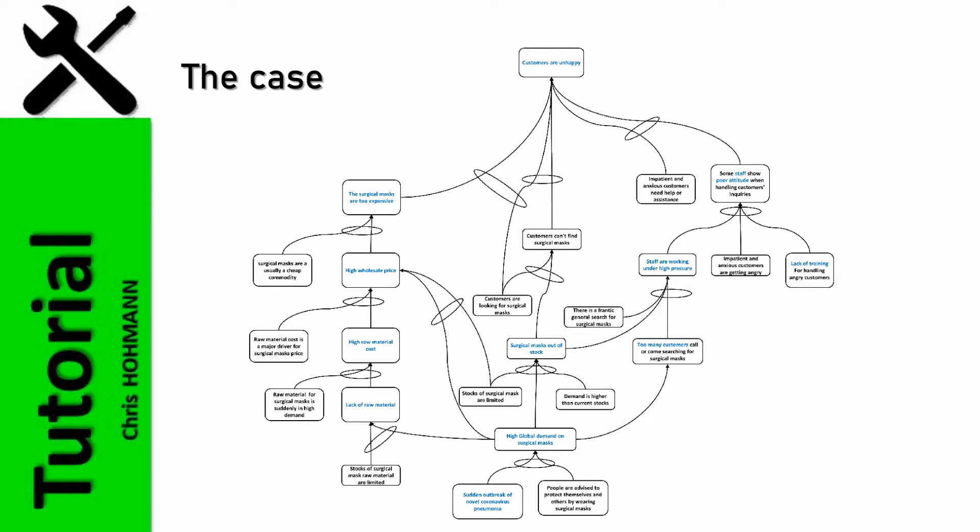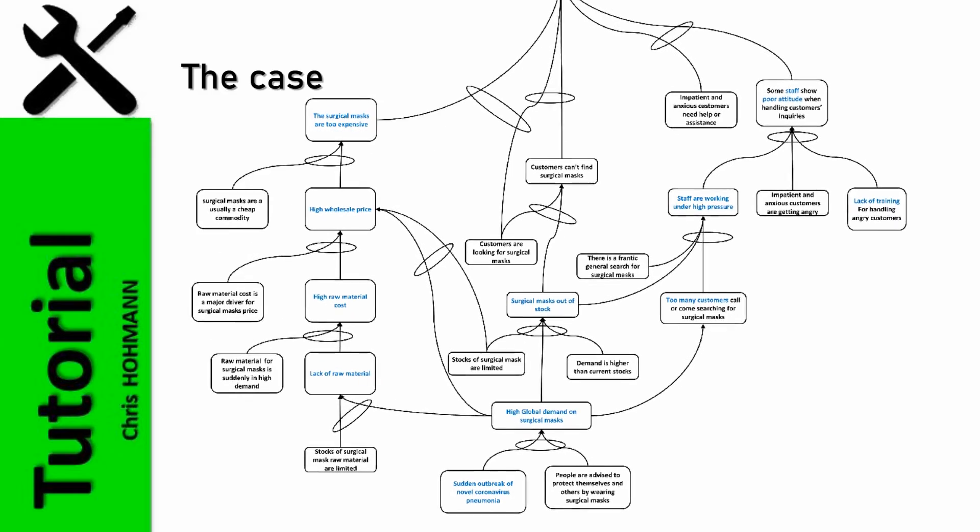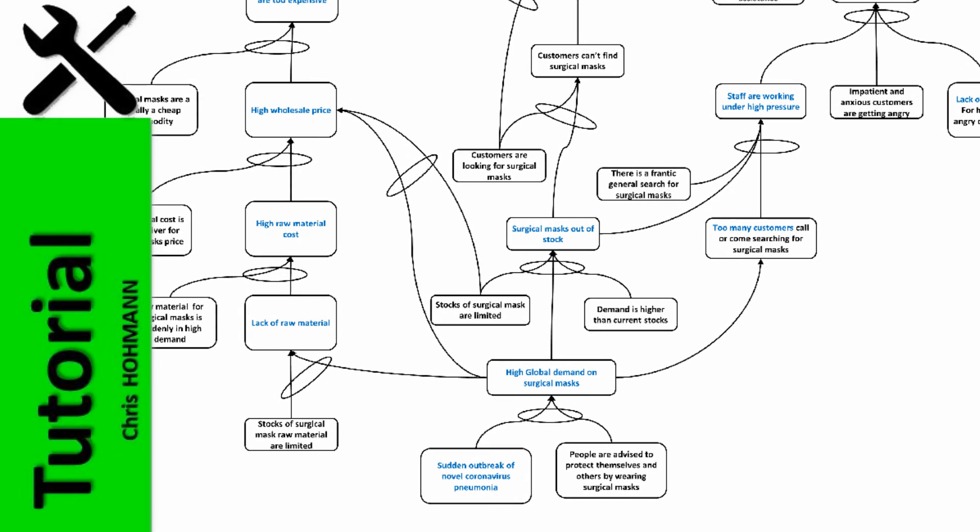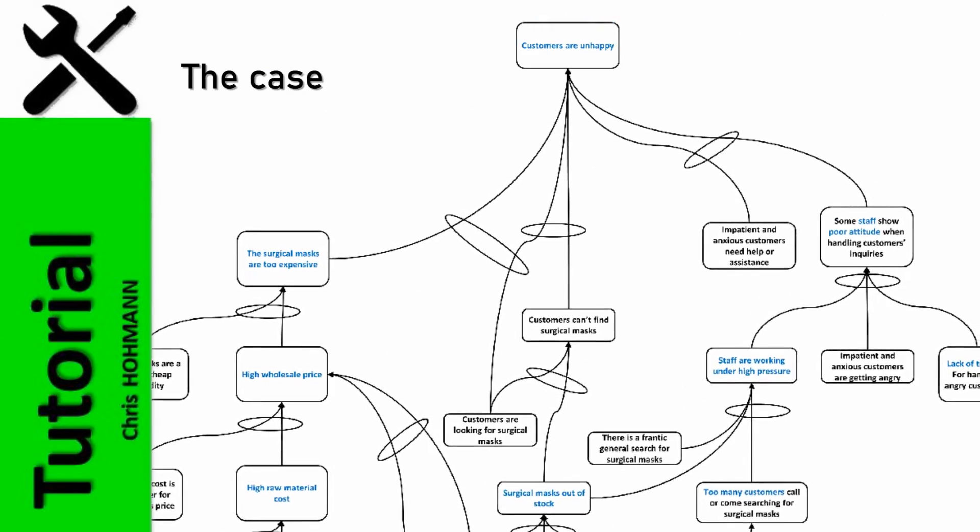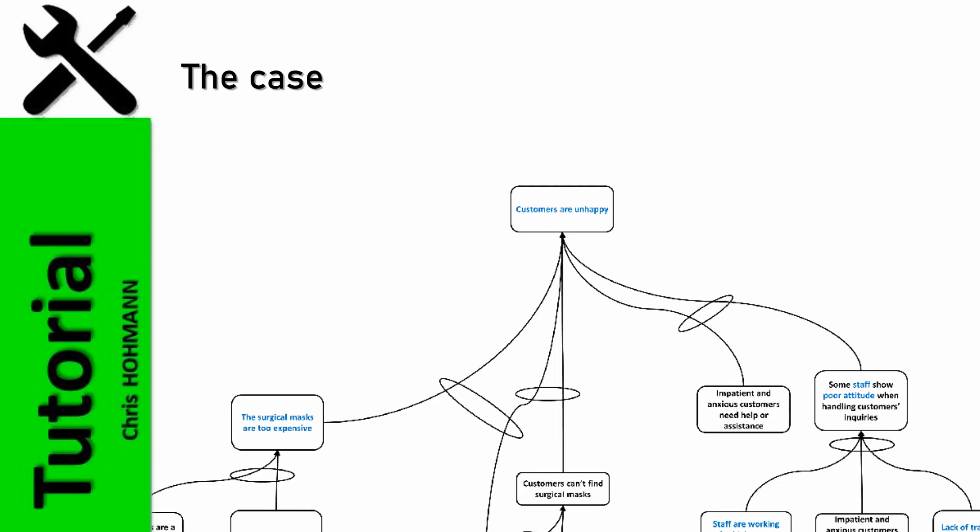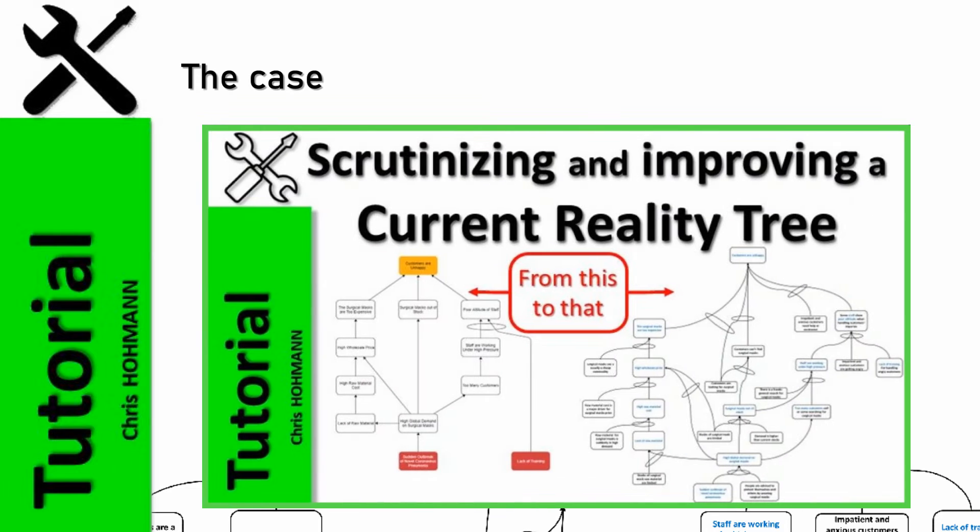For this tutorial, I will reuse the previously presented current reality tree about high global demand on surgical masks leading to unhappy customers in case of a sudden outbreak of novel coronavirus pneumonia. If you haven't seen the previous episode, I strongly recommend you watch it first, as it will help you understand how to convert this current reality tree to a future reality tree.